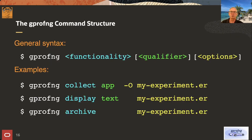Every command starts with 'gprofng', making it automatically unique. Then you give some functionality, a qualifier, and possibly some options. For example, to collect performance information you use the 'collect' functionality, tell it you want to profile your app, and with the dash capital O option you give the experiment directory a meaningful name. 'display text' takes that directory as input for analysis, and you can also do archiving on an experiment directory.